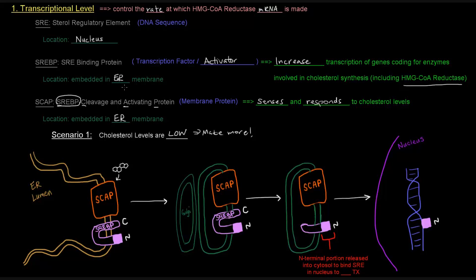So SCAP recognizes that there's a low amount of cholesterol. And what it'll do is it'll trigger the migration of the SCAP protein and, as well as the SREBP, to the Golgi. And it'll be modified there. And you might be wondering what the C and the N are.